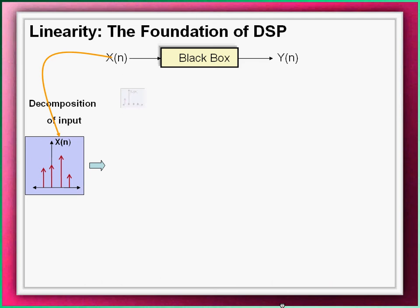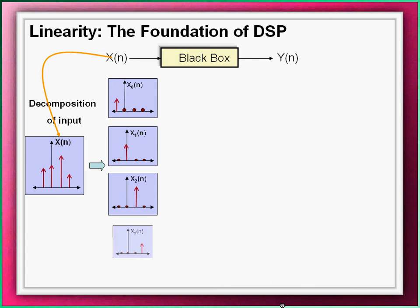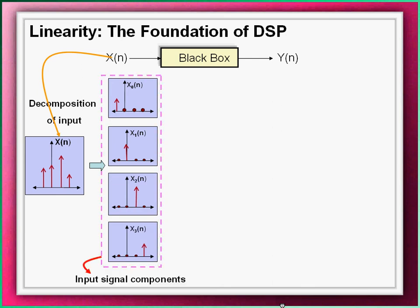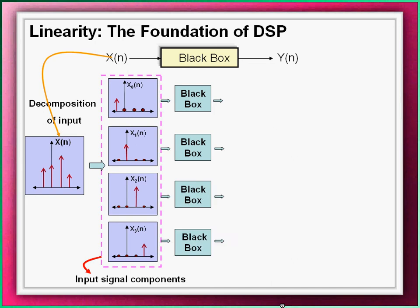Let the input signal be decomposed into a group of simpler signals called X0, X1, X2 and X3. All these together are called the input signal components. Each of these input signal components is then individually passed through the black box independently,